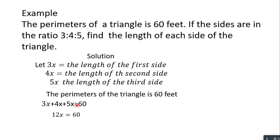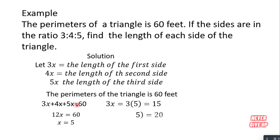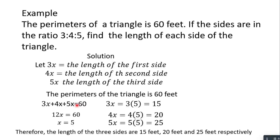Summing 3 + 4 + 5 gives 12x = 60. Dividing both sides by 12 gives x = 5. Now replacing x with 5: 3 times 5 is 15, 4 times 5 is 20, and 5 times 5 is 25. Therefore the lengths of the three sides are 15 feet, 20 feet, and 25 feet respectively. That is straightforward.